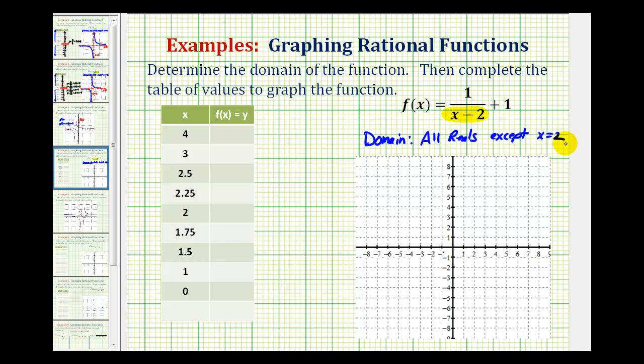This is also helpful in a couple other ways. First, as long as the zero of this denominator is not also a zero of the numerator, we will have a vertical asymptote at x equals two, which is a vertical line that the graph will approach. So we'll have a vertical asymptote here, which will be helpful when sketching the graph.